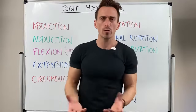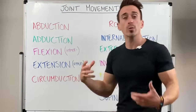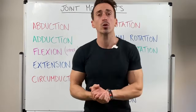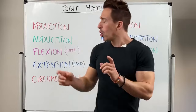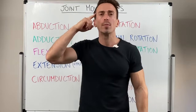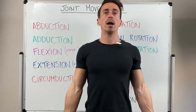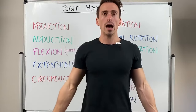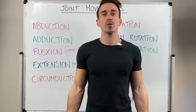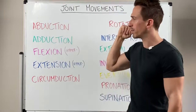The different gross movements that a joint can perform have different names, which I've written up on the board, and we're going to go through them one by one. But before we begin, you need to understand something called the anatomical position, because when we refer to each of these types of joint movements, we always have the anatomical position in mind. This is the anatomical position: feet shoulder width apart, eyes facing forward, arms by the side, palms facing forward. Keep that in mind as we go through these types of joint movement.